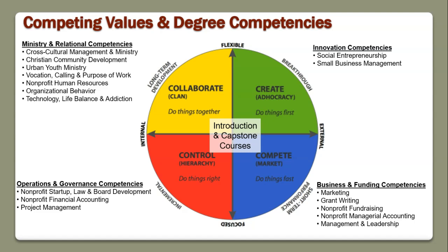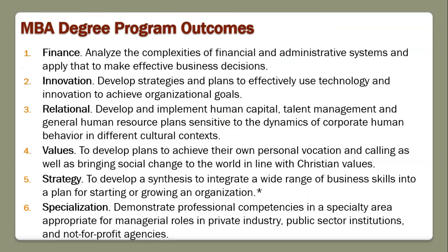Whatever courses you've taken, you're going to integrate what you've learned into a cohesive whole. For instance, if you write a plan for an organization around cross-cultural management and ministry, it may be a great plan, but you may not be able to implement it because of other priorities. The synthesis is ultimately about saying: out of the 150 things we could do based on analysis, what are the five most important? We have six domains we're trying to build competency in: finance, innovation, relational values, strategy, and specialization. This course does strategy while also integrating all of those other values.